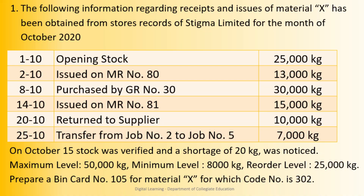14th October, issued on EMR No. 81, 15,000 kg. 20th October, return to supplier 10,000 kg. 25th October, transfer from Job No. 2 to Job No. 5, 7,000 kg. As additional information, on October 15th, stock was verified and a shortage of 20,000 kg was noted. Maximum level 50,000 kg, minimum level 8,000 kg, reorder level 25,000 kg.